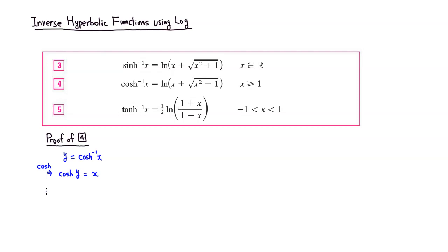The hyperbolic cosine of y, by definition, is e to the y plus e to the negative y over 2, and that equals x. We're trying to solve for y, so first we get rid of the 2 by multiplying both sides by 2, giving us e to the y plus e to the negative y equals 2x.